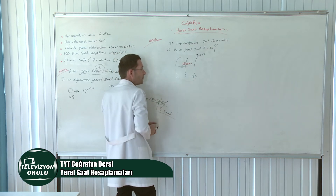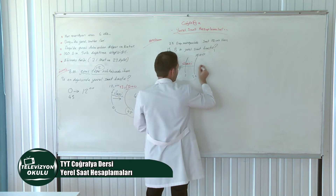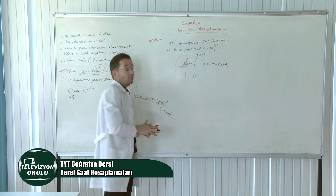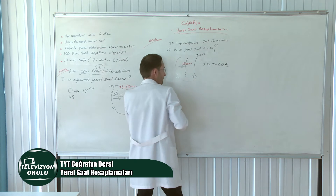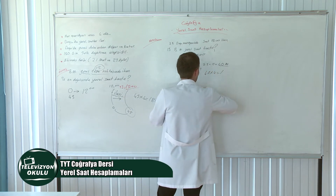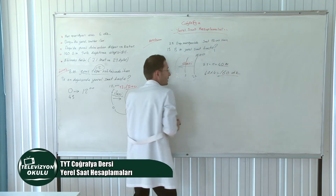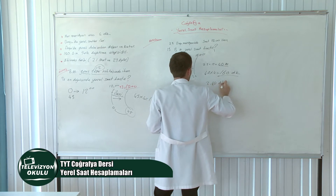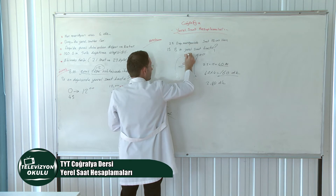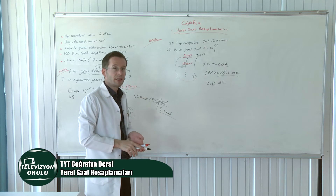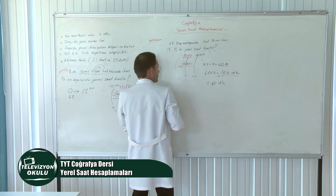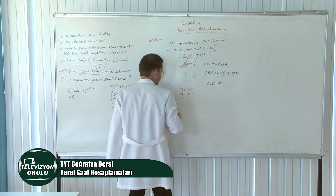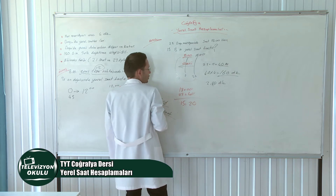160 dakikayı saate çevirirsek 2 saat 40 dakika yapar. Yerel saat 2 saat 40 dakika geri olacak. 18.00'dan 2 saat 40 dakikayı çıkardığımızda saatler 15.20'yi gösterecek.